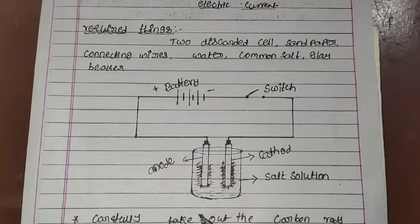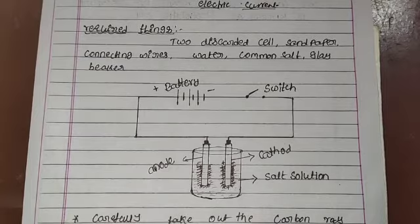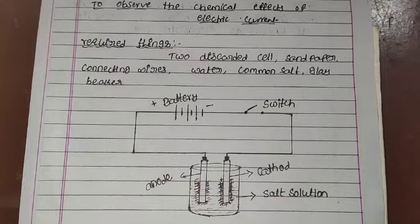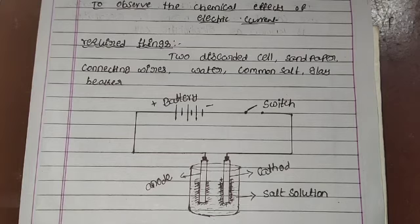In this class, we learnt about the chemical effects of electric current. In the next class, we will study about electroplating — what electroplating means and what its applications are. Thank you.